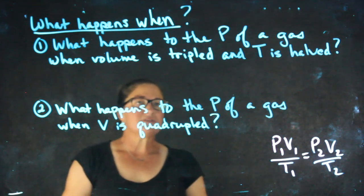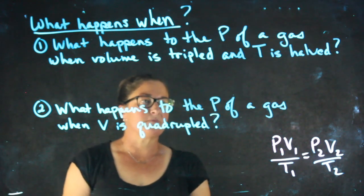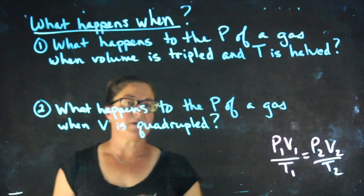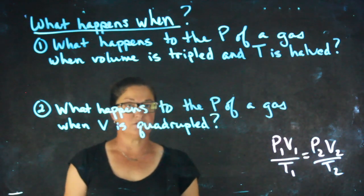So for example, what happens to the pressure of a gas when the volume is tripled and the temperature is halved? These are applications of P1V1/T1 equals P2V2/T2.